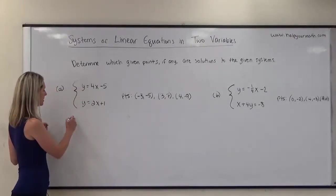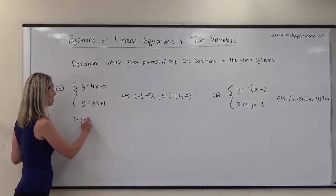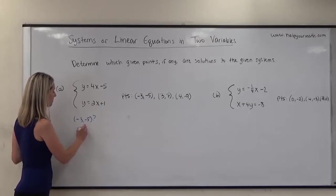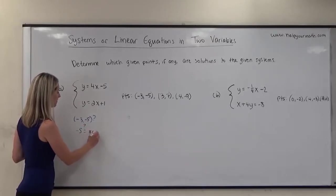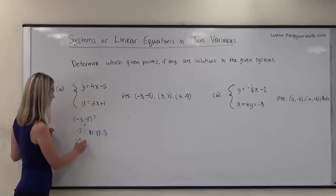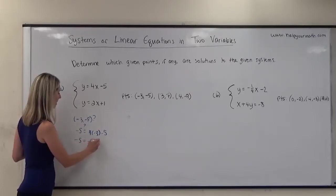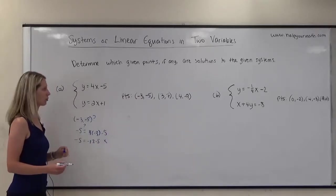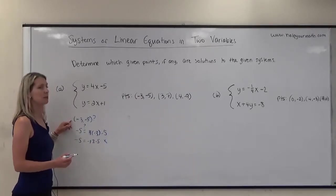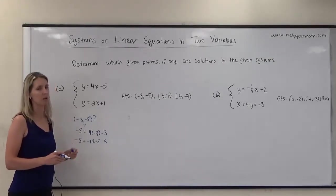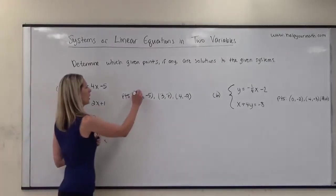First, we're going to see if negative 3 and negative 5 is the solution. Does negative 5 equal 4 times negative 3 minus 5? That gives us negative 5 equals negative 12 minus 5, which is negative 17. That's not true. Because negative 3 and negative 5 didn't work for the first equation, we do not have to check the second equation. The answer is no.